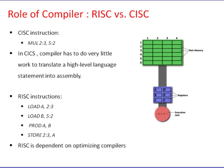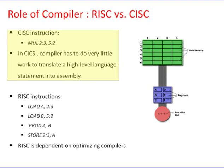Role of compilers in RISC and CISC. The execution unit is responsible for carrying out all computations, but it can only operate on data loaded into one of the six registers: A, B, C, D, E, or F. For example, to find the product of two numbers — one stored in location 2:3 and another in location 5:2 — and store the product back in location 2:3.